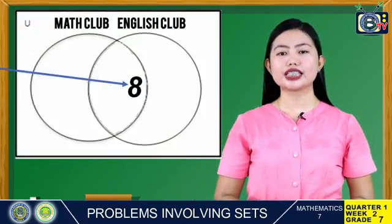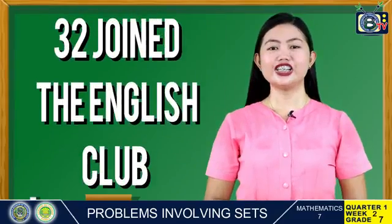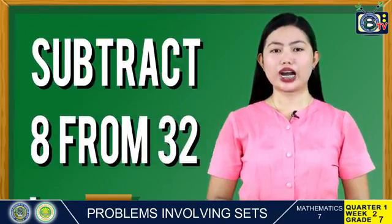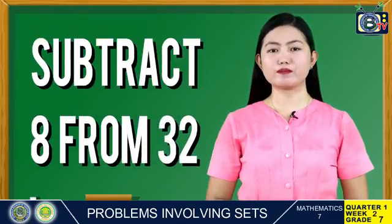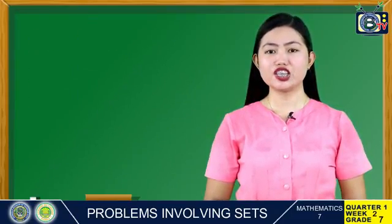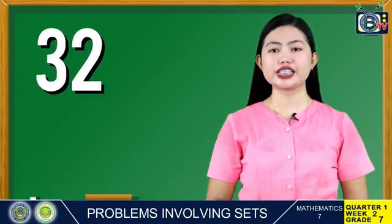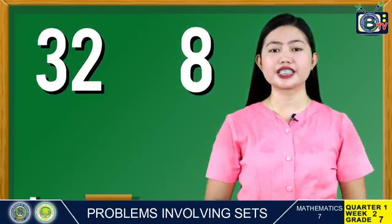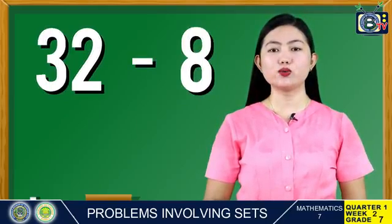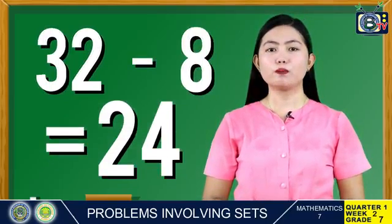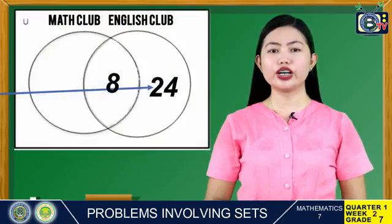The last given data is: 8 joined both Mathematics and English Club. Put 8 at the center where the two sets overlap. For the English Club — 32 joined — subtract 8 from 32. That is 32 minus 8 equals 24. Put 24 in English Club only.